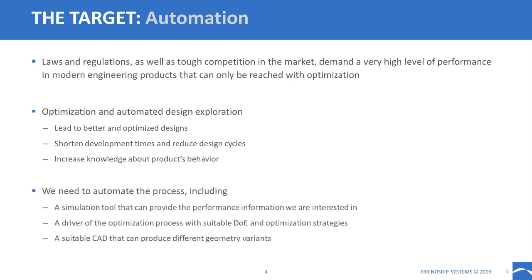In order to run automated design processes we need a few components: a simulation tool to provide the performance information we need; a driver of the optimization process that can trigger all tools in the chain and provide DOE and optimization algorithms — this is handled very well by Optimus; and a suitable CAD tool able to produce all the different geometry variants we'd like to analyze. This final point is what we're trying to address with CASIS.